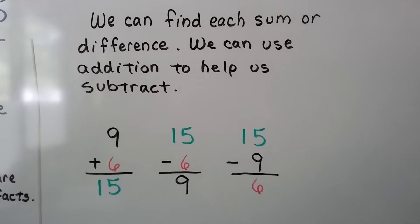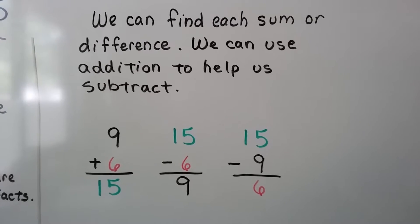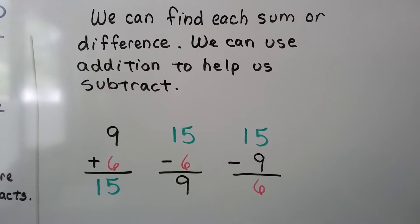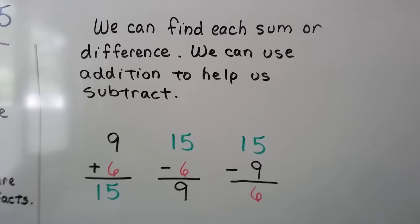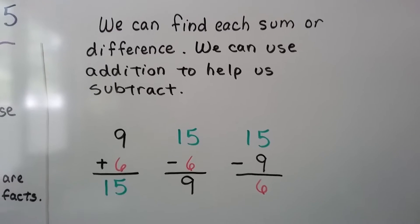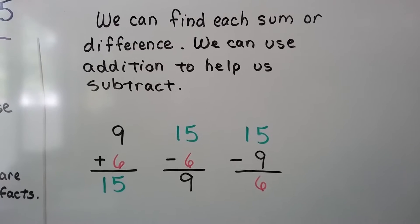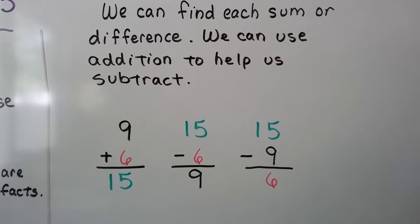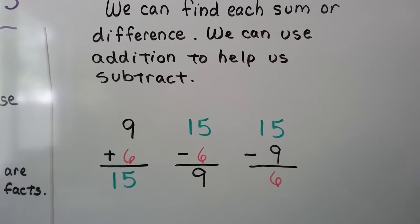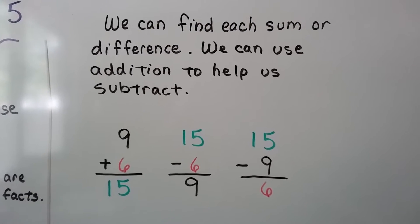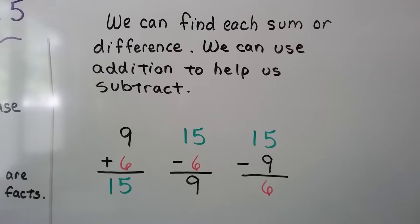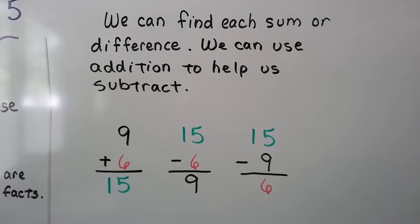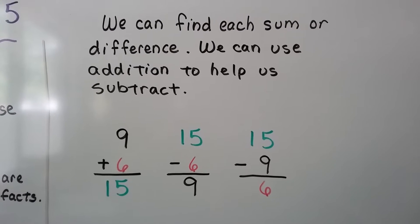Nine plus six equals fifteen. That means fifteen minus six equals nine. And fifteen minus nine equals six. See the three related facts? The nine, the six, and the fifteen.